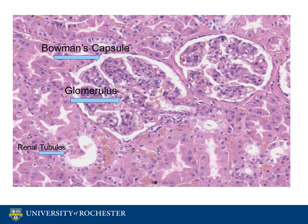Blood brought through the afferent arteriole is filtered by the glomerulus into the capsular space. The glomerulus prevents blood cells, proteins, and other large molecules from passing into the capsular space, while water and small molecules are able to pass through. Microscopically, the glomerulus is composed of the fenestrated endothelium, the glomerular basement membrane, and podocytes. Not all of these are evident on a standard H&E microscopy, but you can identify how the glomerulus is composed of specialized capillaries with red blood cells in some of the vascular spaces.